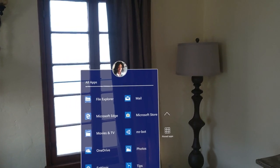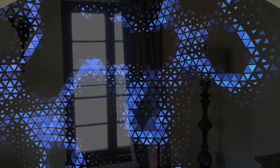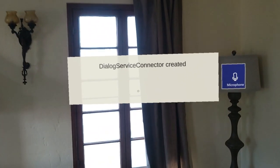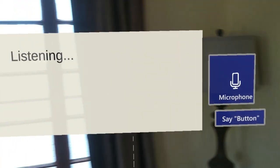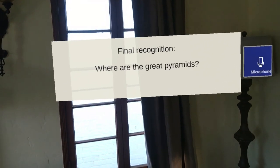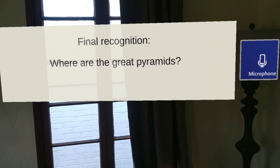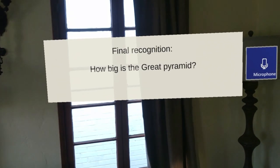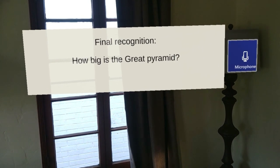Here's the app. Once I start it, it's going to connect to Azure and the bot's going to greet me. 'Hello and welcome.' I can see the dialogue service connector has been created. I'm going to press the microphone button and ask 'Where are the great pyramids?' The bot responds: 'The great pyramids of Giza were located on a plateau on the west bank of the Nile River on the outskirts of modern day Cairo.' I'll ask another question: 'How big is the great pyramid?' The bot responds: 'The sides of the pyramid's base averaged 755 feet. The original height of the pyramid was 481 feet.' So that works.